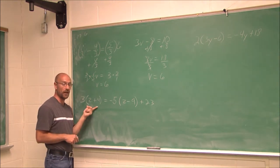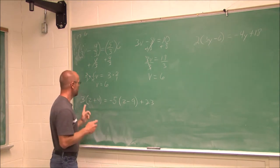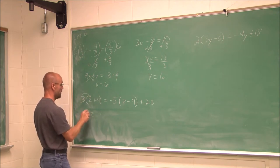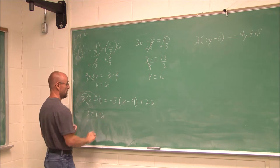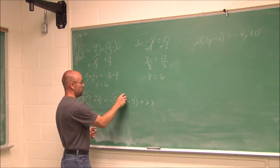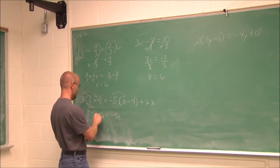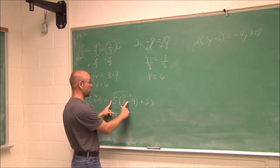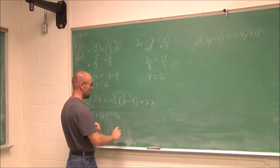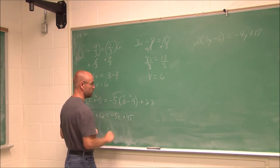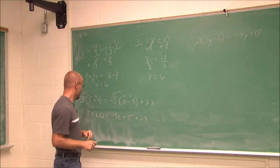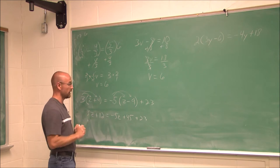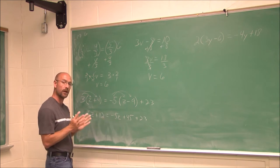The first thing I'm going to do is eliminate any parentheses. I identify there are parentheses here, so I use the distributive property to eliminate them: 3 times z and 3 times 4; then negative 5 times z and negative 5 times negative 9. Watch those signs — a negative times a negative is positive, so negative 5 times 9 is 45, giving us positive 45. I notice there's a z on both sides.